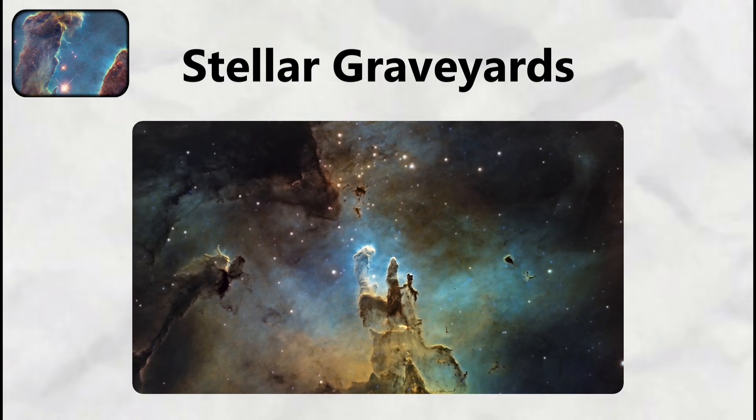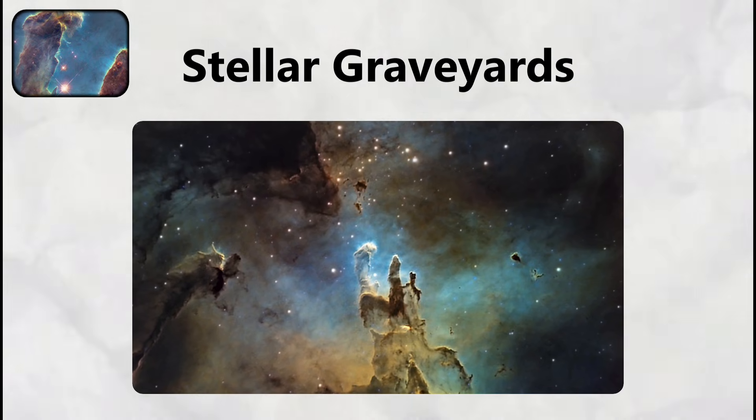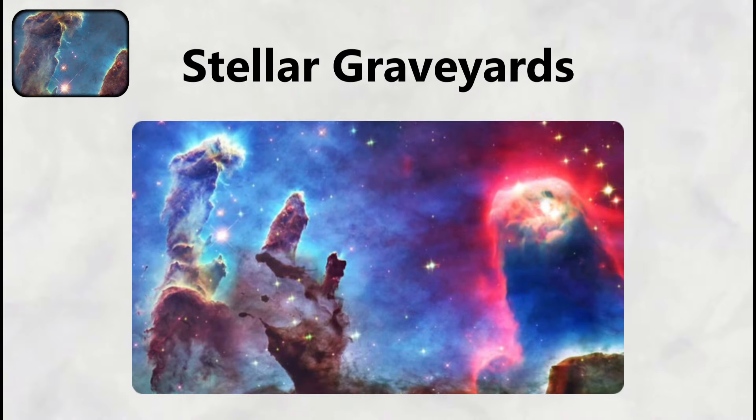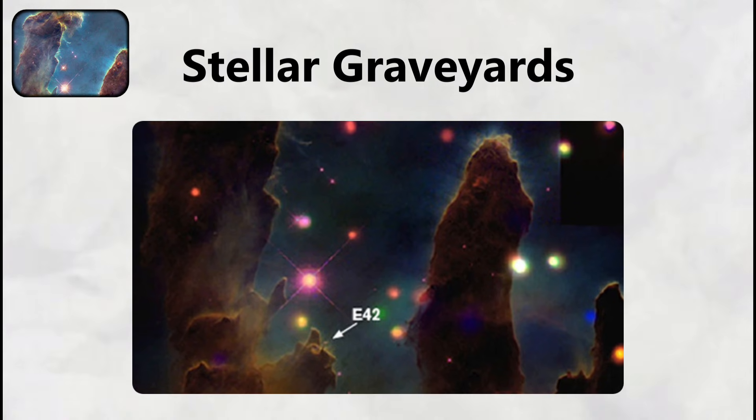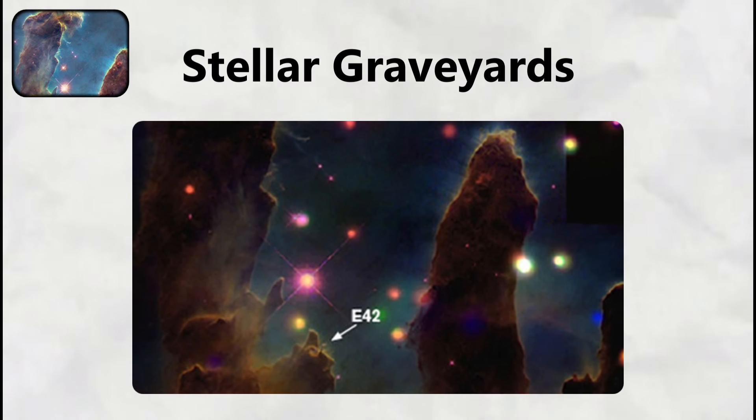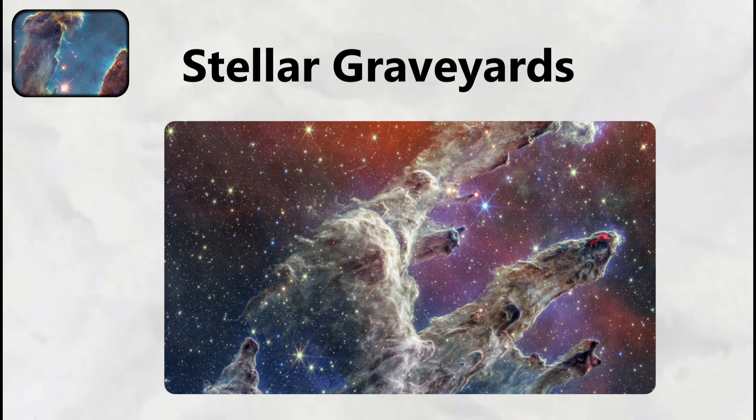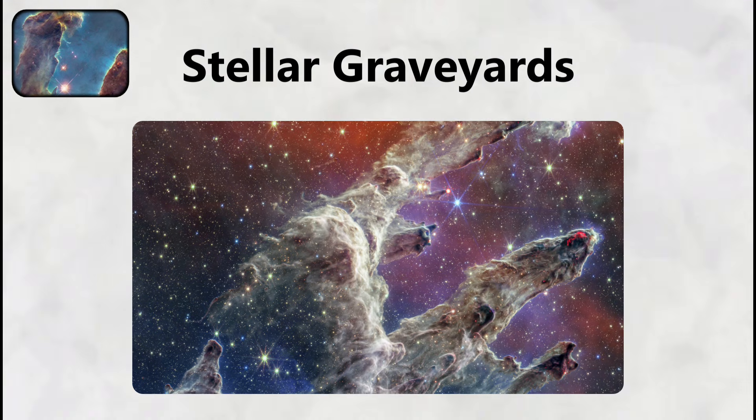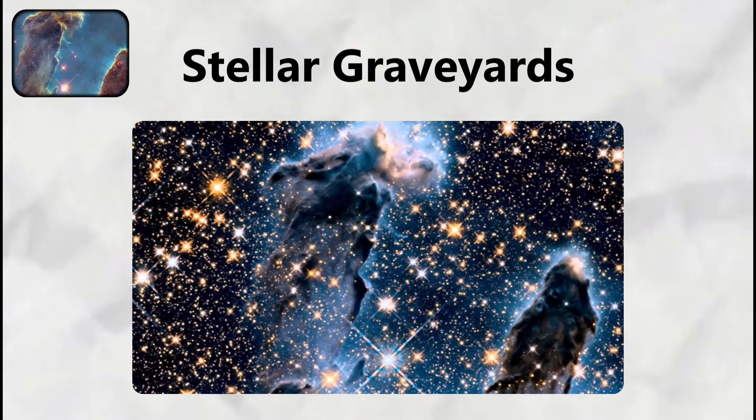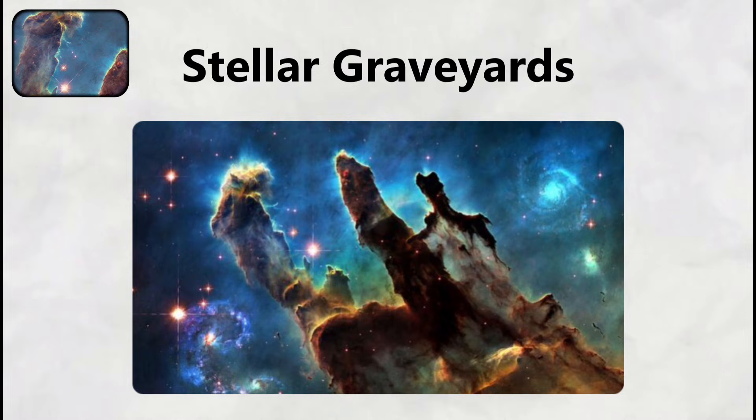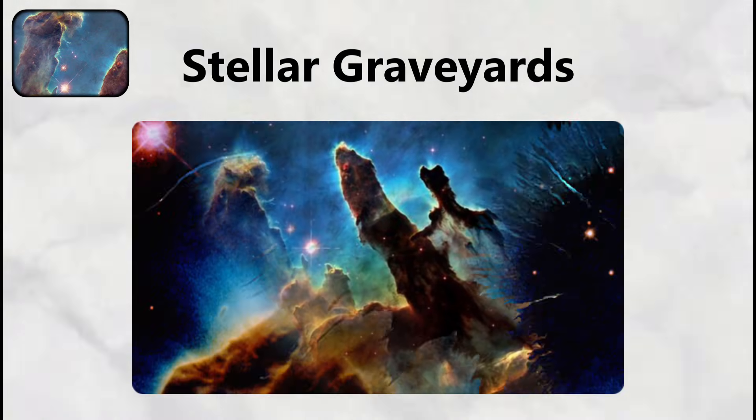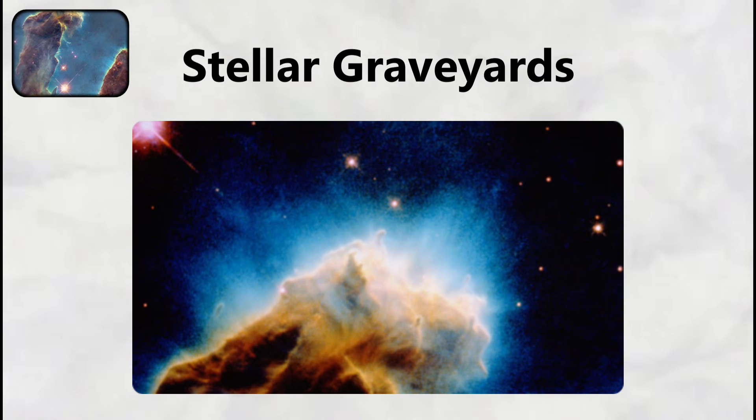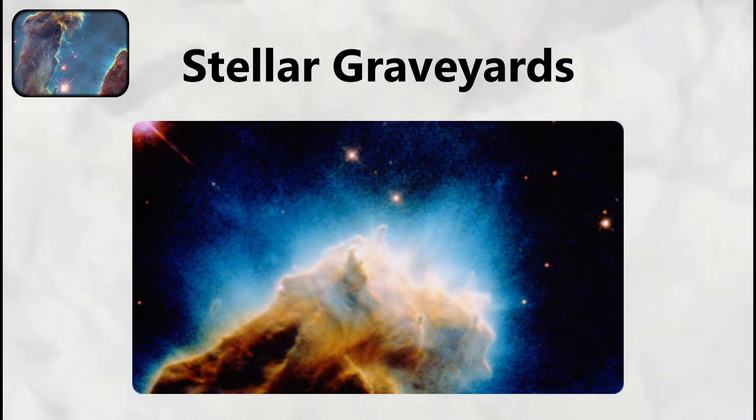The pillars consist primarily of hydrogen gas mixed with heavier elements like carbon and oxygen, creating dense regions where gravity can collapse material into new stars. However, the same massive young stars that illuminate these structures are simultaneously destroying them through intense ultraviolet radiation and stellar winds. These newborn stars emit radiation so powerful that it heats the surrounding gas to temperatures exceeding 25,000 degrees Celsius, causing the pillars to evaporate at a rate of approximately 700 Earth masses per year.